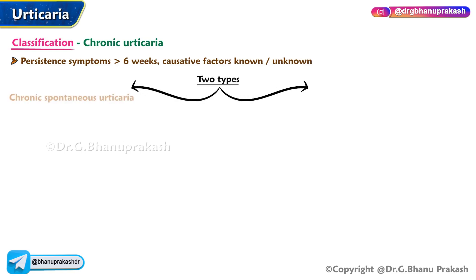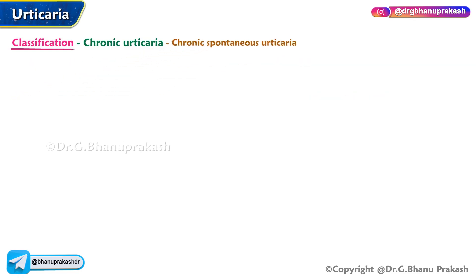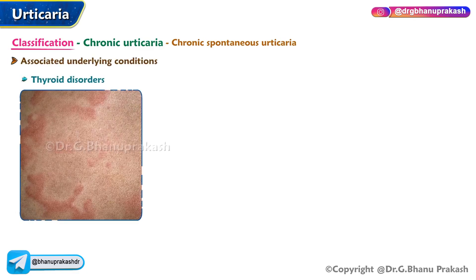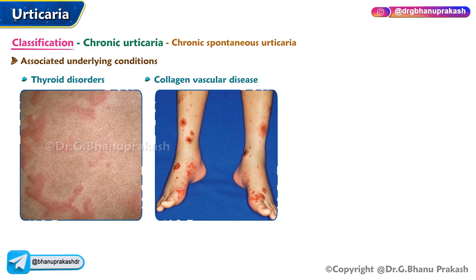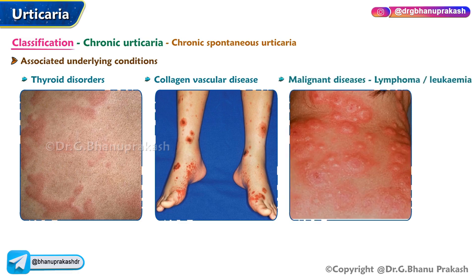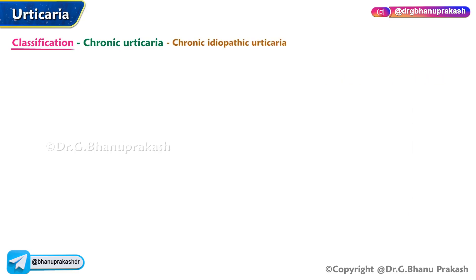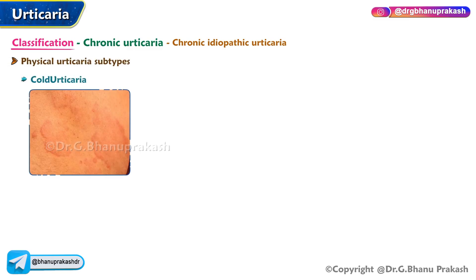Chronic urticaria is of two types: chronic spontaneous urticaria and chronic idiopathic urticaria. Chronic spontaneous urticaria may be associated with underlying conditions such as thyroid disorders, collagen vascular disease, and malignant diseases like lymphoma or leukemia. Chronic idiopathic urticaria encompasses various subtypes, including physical urticaria.